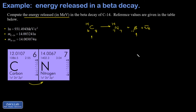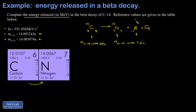A really common mistake in beta decay is to include the mass of the electron separately. This is an issue with how the tables are designed. The mass of N14 includes seven electrons, and the mass of C14 includes six electrons. So because the N14 mass already accounts for the extra electron, adding another electron mass would be double counting.